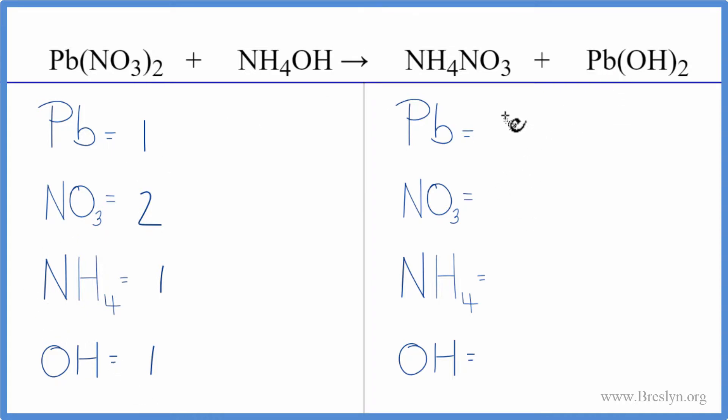On the product side, we have one lead, one nitrate, one ammonium ion, and then one hydroxide times two. We have two of those. So this is a lot neater than counting up all those oxygens and nitrogens and everything.